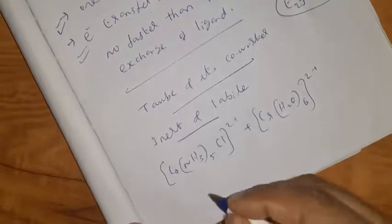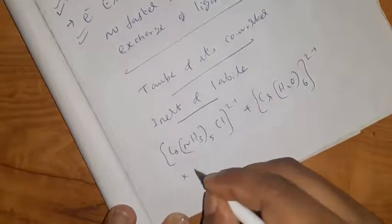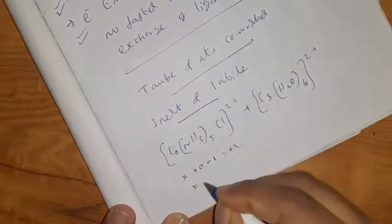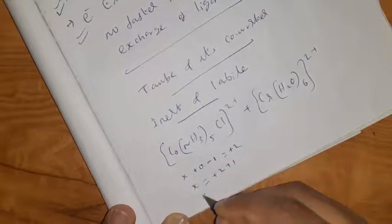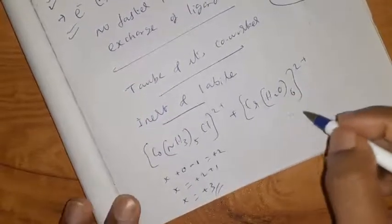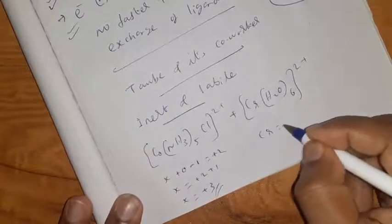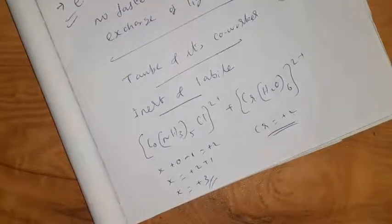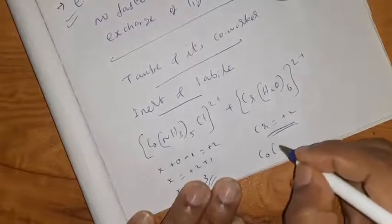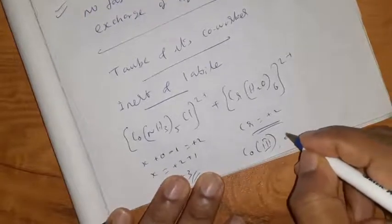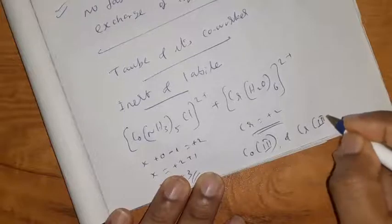For the oxidation state calculation: X plus 0 minus 1 equals plus 2, so X equals plus 3. Cobalt is in the plus 3 oxidation state, making it an inert complex. Chromium(H2O)6²⁺ has chromium in the plus 2 oxidation state, which is a labile complex.